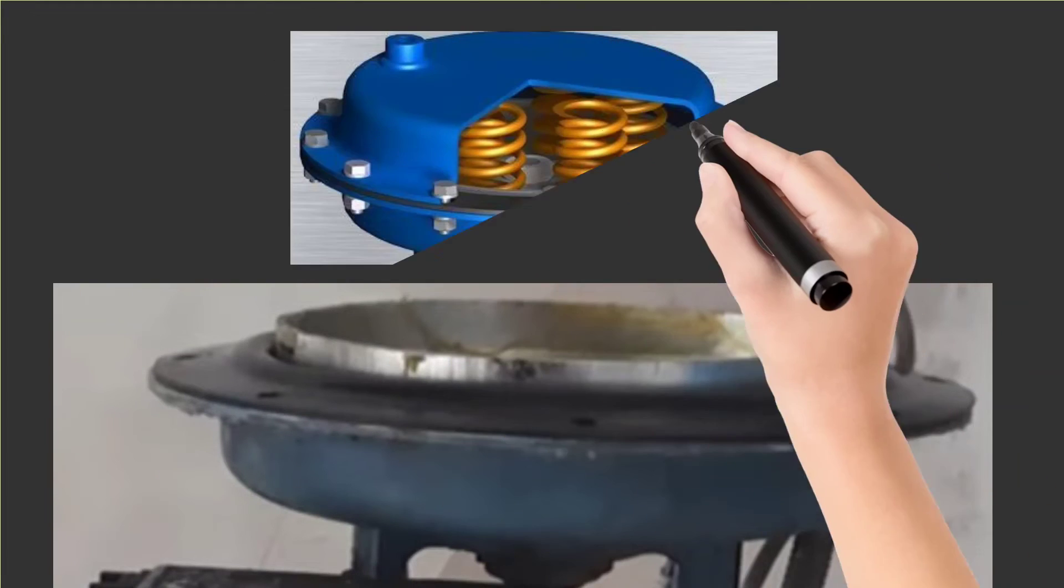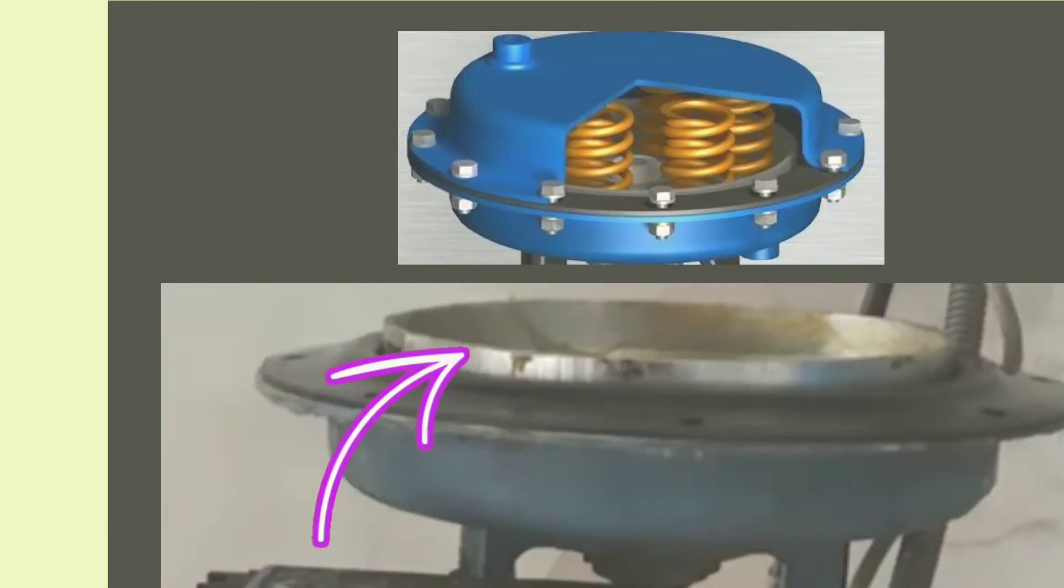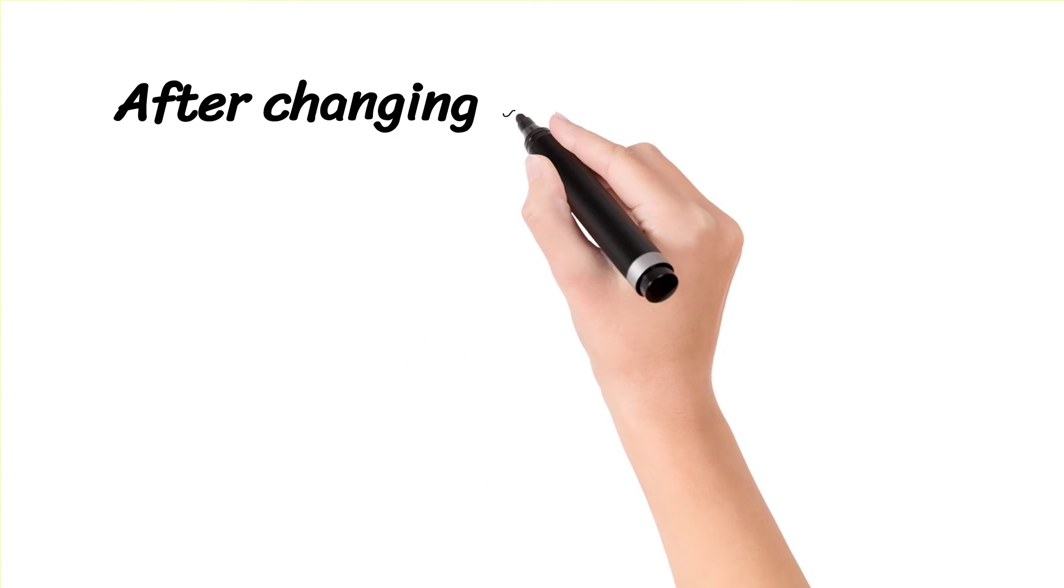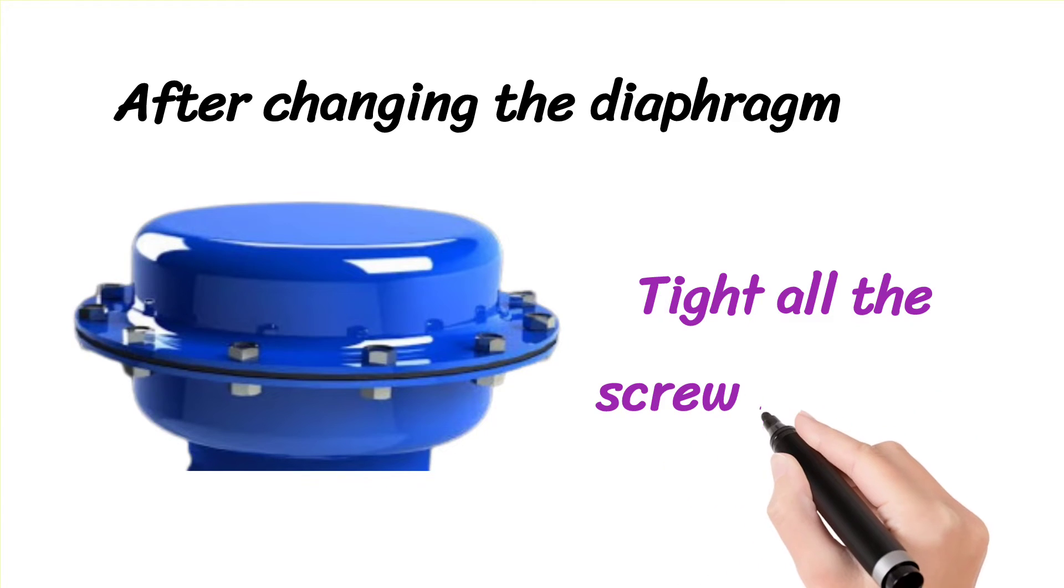After opening the upper side cover, we will find the control valve diaphragm as shown by the arrow. After change the diaphragm, all the nut bolts must be tightened properly. Make sure about nut bolts tightening. Otherwise, air leakage may be there.